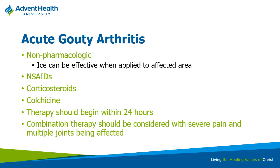Patients with recurrent gout attacks can be given a colchicine prescription on an as-needed basis. If they know an attack is coming on, they can start colchicine early. The earlier it's started, the better the outcome. Combination therapy is typically reserved for multiple affected joints or when pain isn't managed with one agent alone.